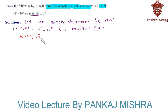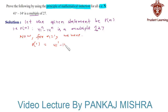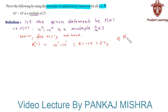For n equals to 1, we have P(1) equals to 41 raised to 1 minus 14 raised to 1, which is equal to 41 minus 14, and the difference of these two numbers is 27. Since 27 is a multiple of 27, therefore we will say that P(1) is true for the given statement.